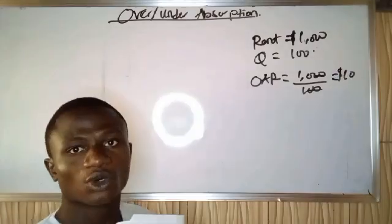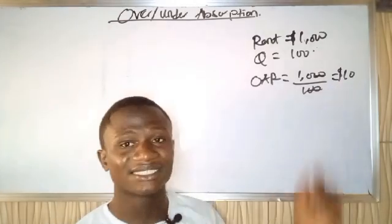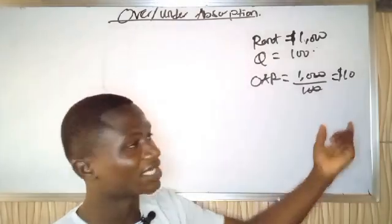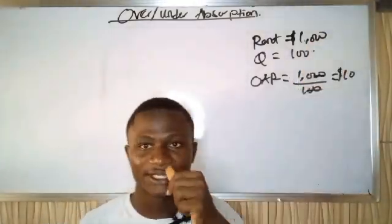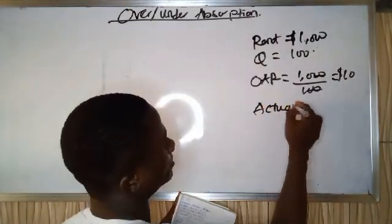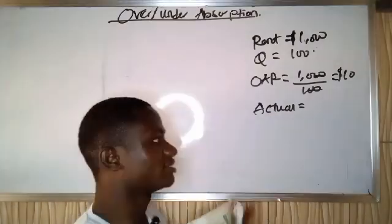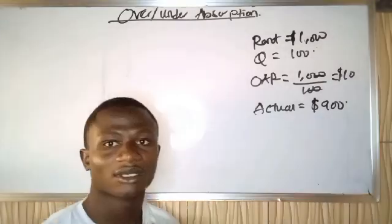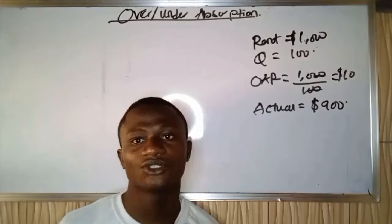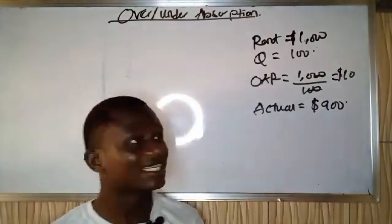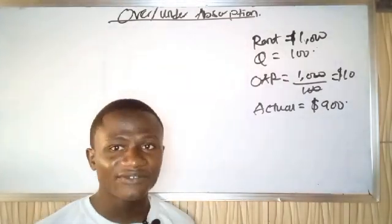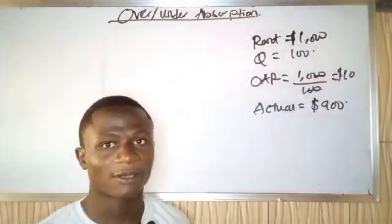So that means I'm going to be adding an extra $10 to every unit produced in order to cover the amount for my rent. But the actual rent I was able to cover after producing is $900 — the actual rent covered out of $1,000 is $900. Now, what are the cases that lead to under or over absorption of overheads?